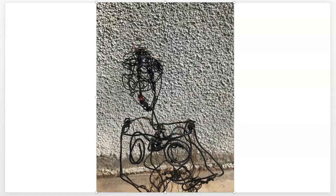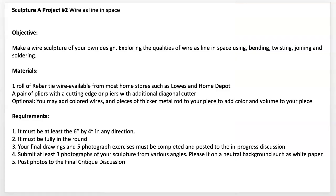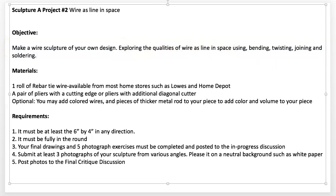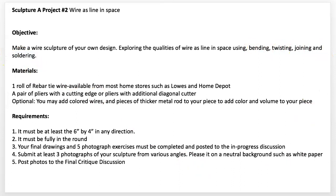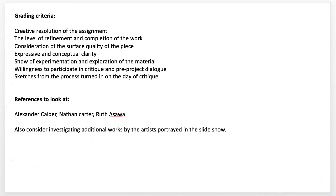This project sheet is going to be in Canvas. The objective is to make a wire sculpture of your own design, exploring the qualities of bending, twisting, and joining — you can solder it if you want. You're going to want rebar wire, pliers and diagonals. It has to be at least six inches by four inches in any direction and fully in the round. Your final drawings and photograph exercises have to be in the discussion board, and you have to submit at least three photographs of your sculpture from various angles on a neutral background. This is how it's graded: creative resolution, refinement, surface quality, clarity of conception, and expressiveness.